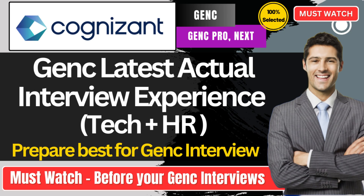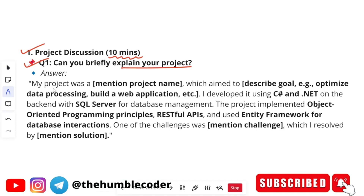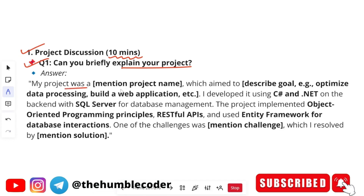Let's get started with today's interview experience. First, let's see the questions and timelines. For project discussion, around 10 minutes were taken. The first question asked was: 'Can you briefly explain your project?' I'm giving you a template to use, but you have to customize it according to your own project. A possible answer can be: 'My project was [project name], which aimed to [goal of project].'